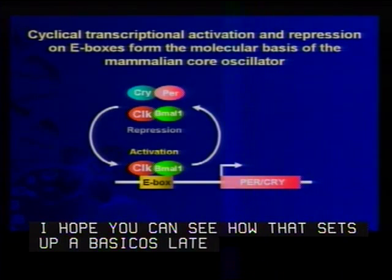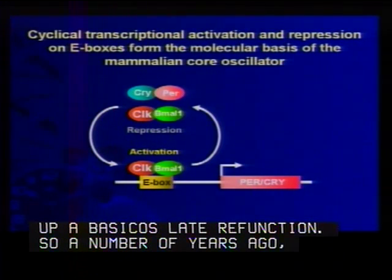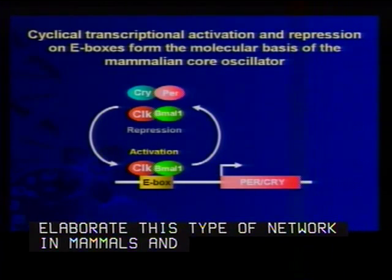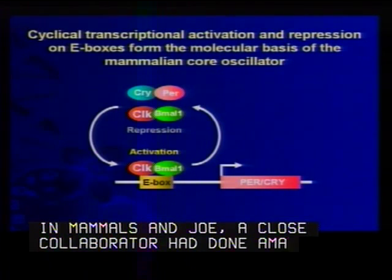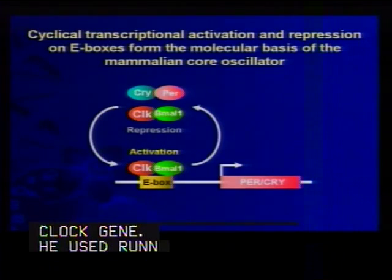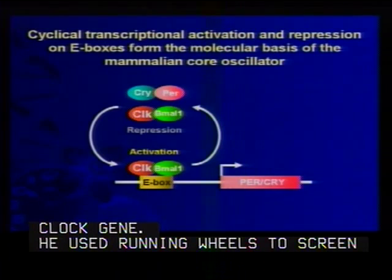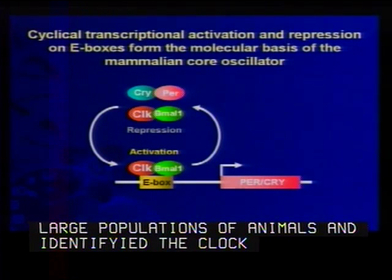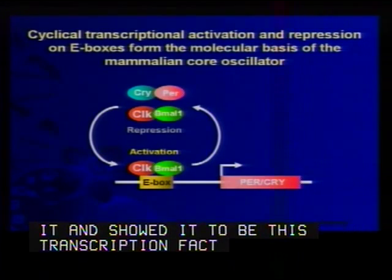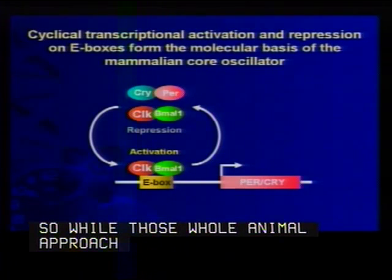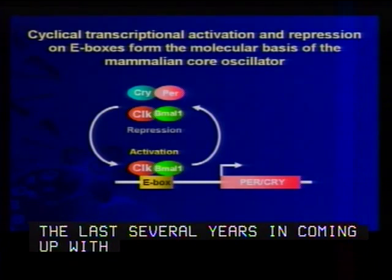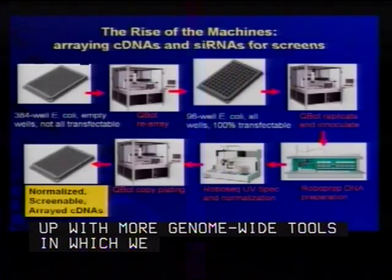A number of years ago my lab was interested in elaborating this type of network in mammals. Joe Takahashi, a close collaborator, had done amazing work using mouse forward genetics to identify the mouse clock gene — actually using running wheels to screen large populations of animals, identifying the clock gene as a clock mutant in mouse, cloning it, and showing it to be a transcription factor. While those whole-animal approaches are really valuable, our lab has become more interested in coming up with genome-wide tools to associate genes with clock function in a more efficient way.